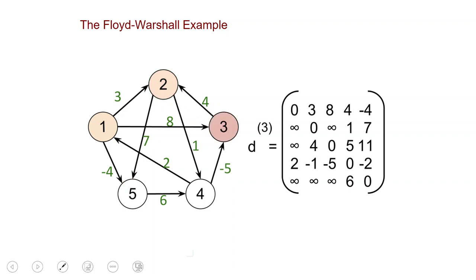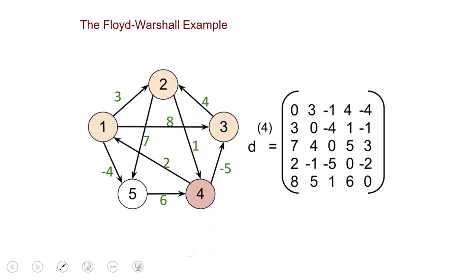Then we compute D superscript 3. The only entry that changes is 4,2: from 4 to 2 we can now do minus 5 plus 4, giving minus 1. Next we compute D superscript 4, where many entries change. For example, entry 3,5 changes to 3 — it used to be 11, but now we can first go to 4 with a path costing 5, then from 4 do 2 minus 4, so the total cost would be 3. This 3 is obtained by a path costing 4 plus 1 and then 2 minus 4.